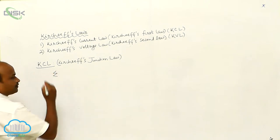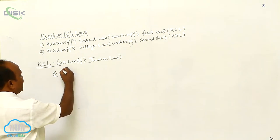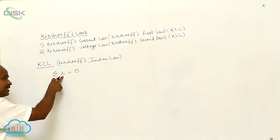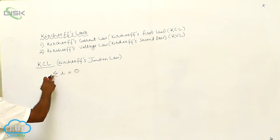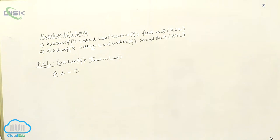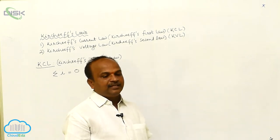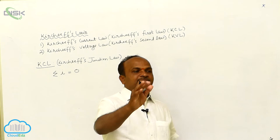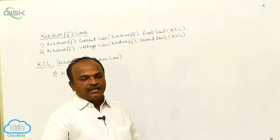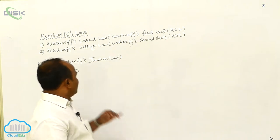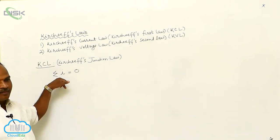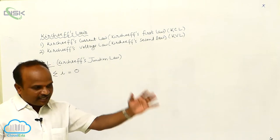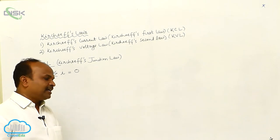The algebraic sum — this is the symbol — of currents I is equal to zero. Whenever the term algebraic is used, there is a need for a sign convention. The currents towards the junction are taken as positive; the currents away from the junction are taken as negative.